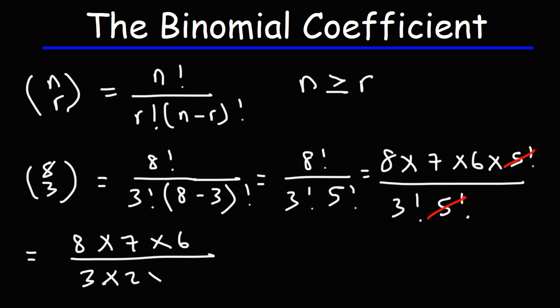3 factorial, we can break that up into 3 times 2 times 1. Now 8 times 7 is 56. 3 times 2 times 1 is 6. 6 divided by 6 is 1. Therefore, the final answer is going to be 56. So that is the value of the binomial coefficient 8 above 3.